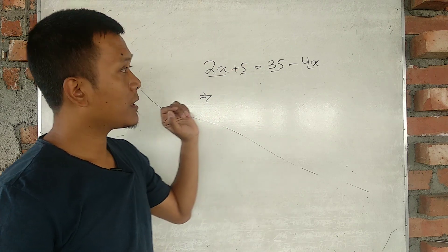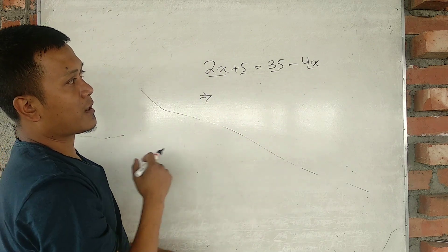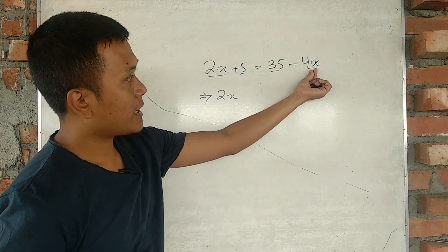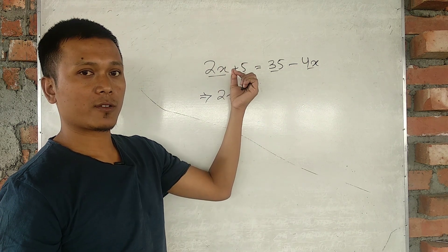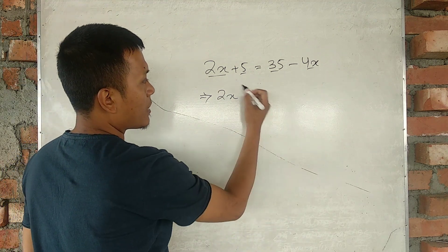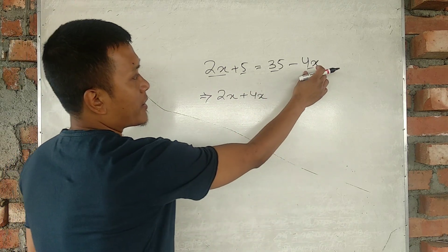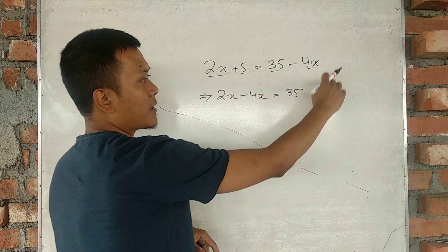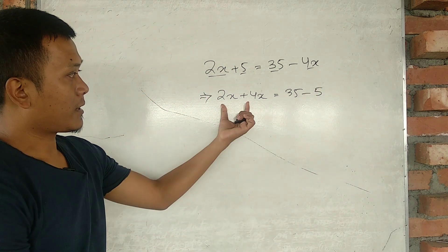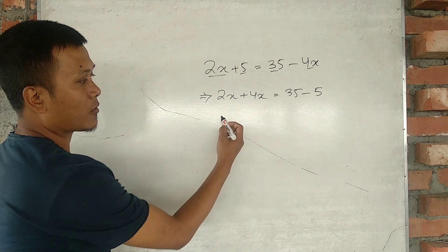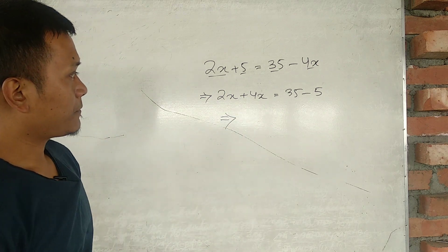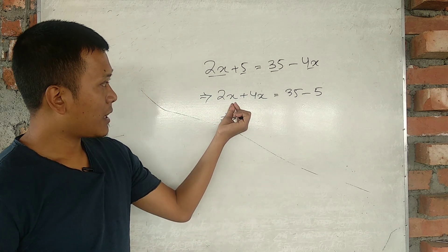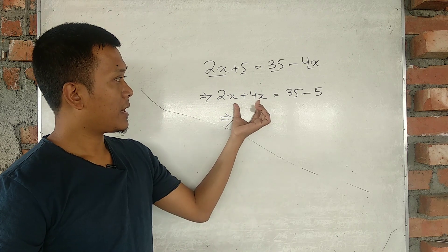We transpose the 4x from the right-hand side to the left-hand side. Negative 4x becomes positive 4x on the left. We also transpose the constant 5 from the left-hand side to the right-hand side. Its reverse operation makes it minus 5. So we get 2x plus 4x on the left.